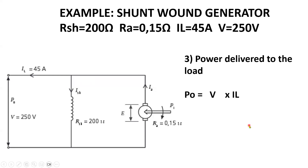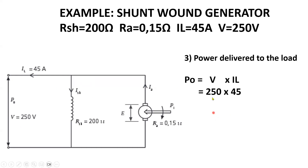This is a DC machine, so to calculate the power it will be voltage multiplied by load current. For a generator we use the output power — mechanical in, electrical out. The terminal voltage of 250 multiplied by the supply current of 45 amps gives us 11,250 watts, or 11.25 kilowatts.